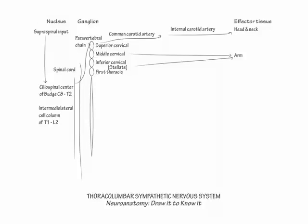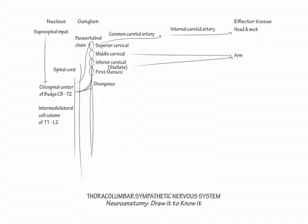Within the sympathetic system, both divergence and convergence of preganglionic sympathetic fibers occur. Divergence is the multilevel synapses of different preganglionic fibers originating from the same spinal level — preganglionic fibers synapse in ganglia at their level of origin or at levels above or below along the sympathetic chain. In contrast, convergence is the confluence of fibers from different preganglionic levels.